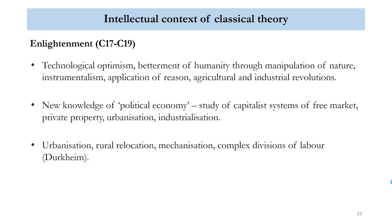Over the course of the Enlightenment, we also see the emergence of what would later be known as economic and social science, but was at the time referred to as political economy. We still use the term today to refer to a subdiscipline of sociology that looks at the relationship between social and political systems and economic activity. This new science looks predominantly at capitalist systems and free markets, but also at institutions — key among them private property, which underpins private ownership and the colonial logic of what you secure, you own and have the right to exploit.